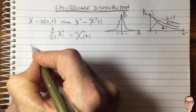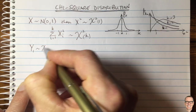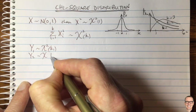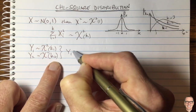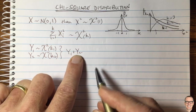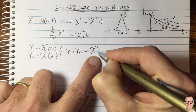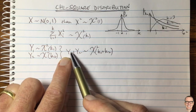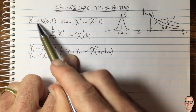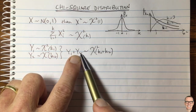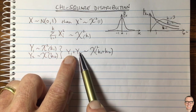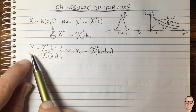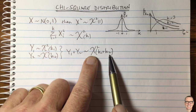Another important property: if you have a random variable Y1 that is chi-square with degree of freedom k1, and another Y2 that is chi-square with degree of freedom k2, then Y1 plus Y2 is also chi-square with degree of freedom k1 plus k2. This makes sense because each variable is a sum of squares of Gaussians, and combining them gives a single summation with k1 plus k2 terms.